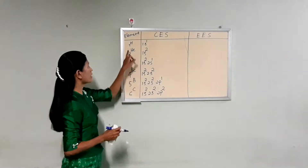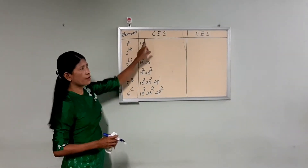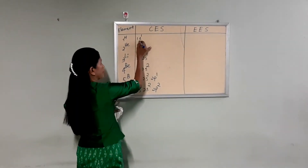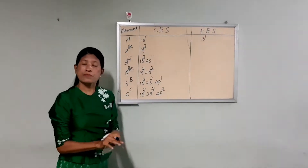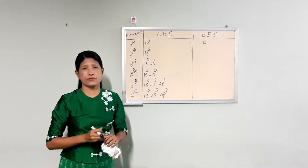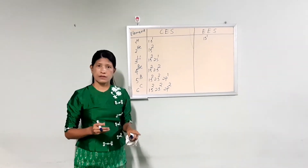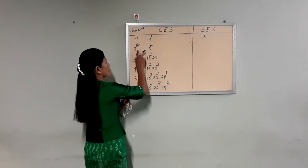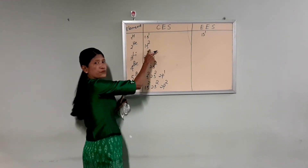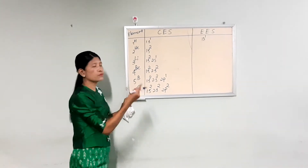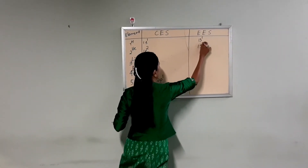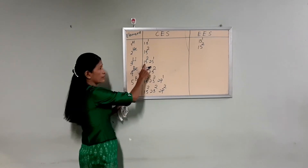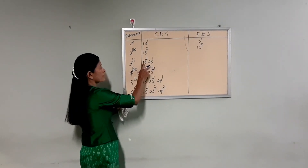EES is also called CES. CES is for 1H, written as 1s1. EES is written as 1s1. You should know that the electronic structure is called EES. One is two, three is one, two is one.